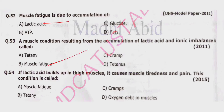Question 54: If lactic acid builds up in the thigh muscles it causes muscle tiredness and pain. This condition is called muscle fatigue, tetany, cramps, or oxygen debt in muscle. Correct option is alpha — muscle fatigue.